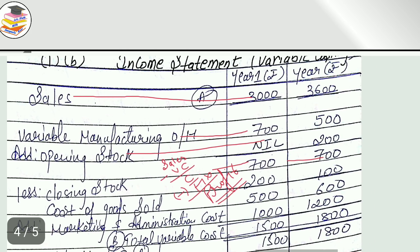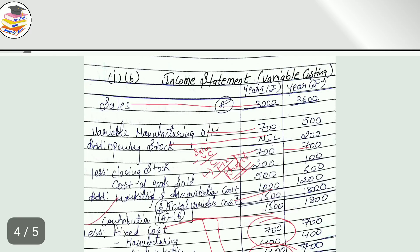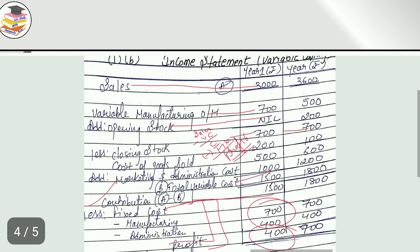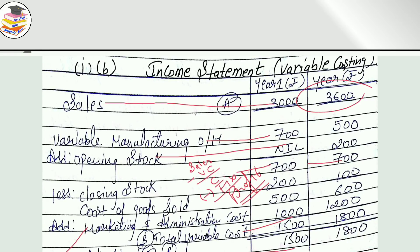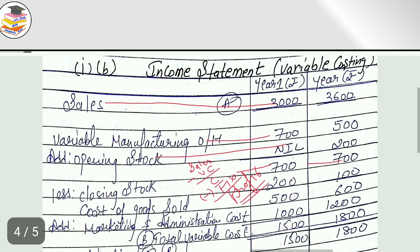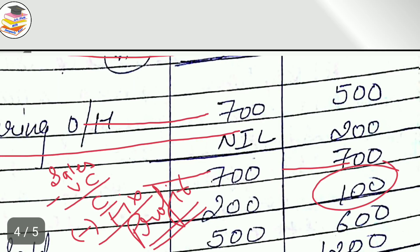For year 2: sales remain as given. Opening stock comes from last year's closing — Rs. 200. Add variable manufacturing Rs. 700. Closing stock: 200 units into Rs. 0.5 = Rs. 100. Subtract closing stock Rs. 100 from the total. Opening stock plus production minus closing stock gives cost of goods sold.